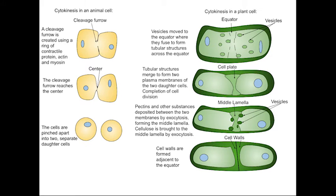Note that in a dividing animal cell, a cleavage furrow forms during cytokinesis and pinches the parent cell into two identical daughter cells. Plant cells do not produce cleavage furrows. They form cell plates which divide cells into two. Each cell plate grows outward until it reaches the plasma membrane and divides the parent cell into two daughter cells. Later, a new cell wall forms from the cell plate and two separate genetically identical cells form.